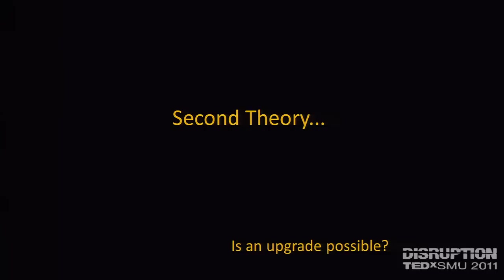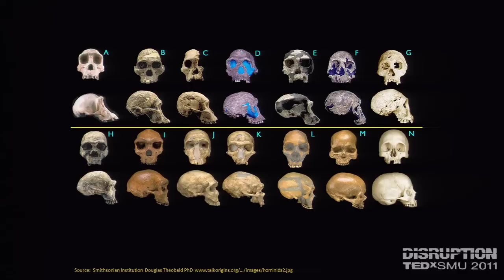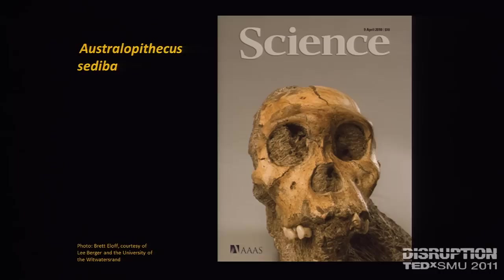As you're thinking of the implications of that, you might want to think about a second theory: could we ever upgrade? We've had 28 so far. There have been at least 28 versions of hominids, and we keep discovering them. In fact, last year we found a 29th. We keep unearthing these various versions of humanoids.